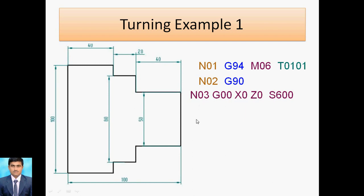The next code is G00 — rapid traverse — and X0 Z0 means the point will be approached at the workpiece zero point. Spindle speed is S600, that is 600 RPM. Always remember: sequence number N is first, then the preparatory code, then the coordinate system, then the miscellaneous function.